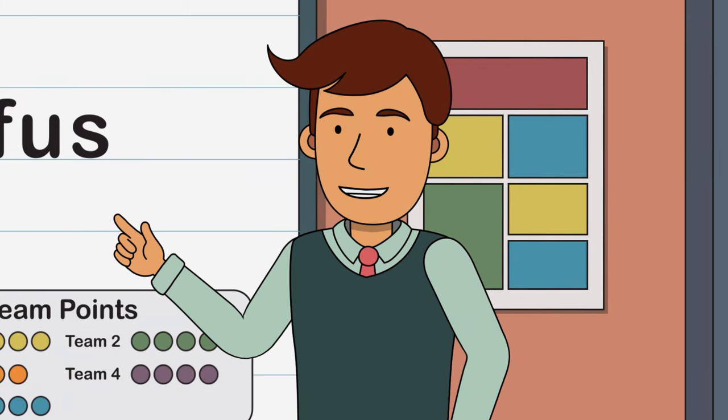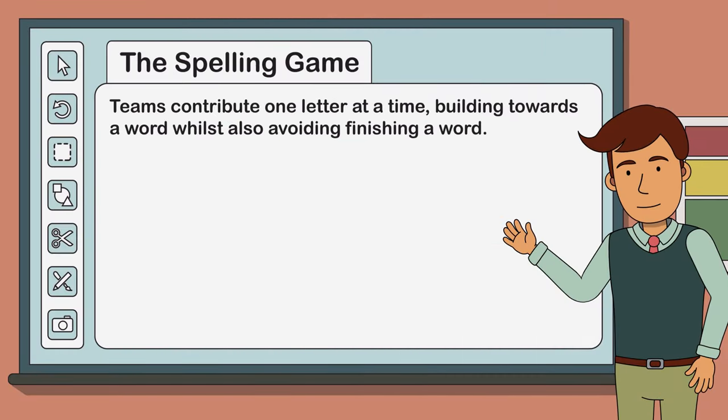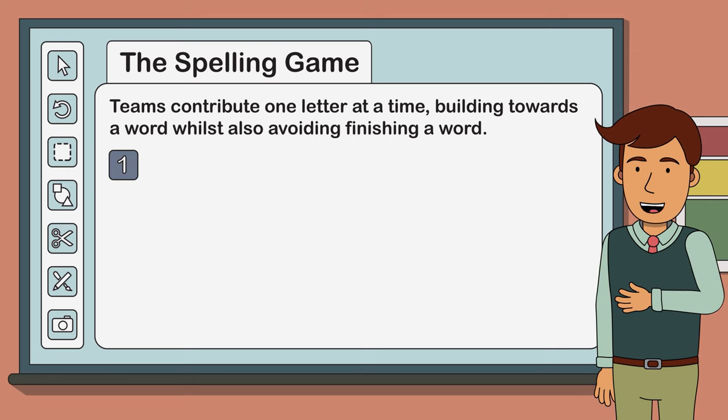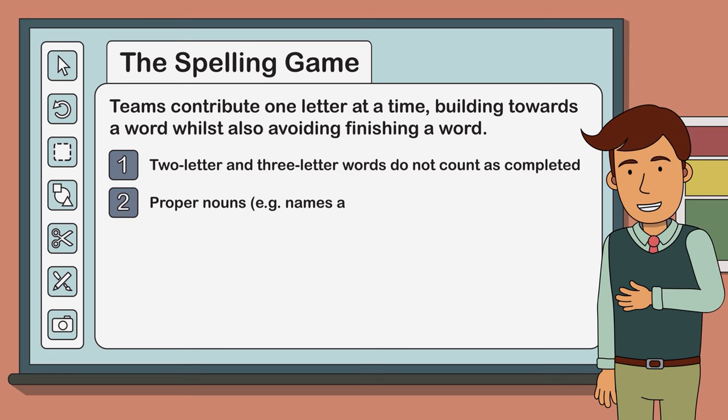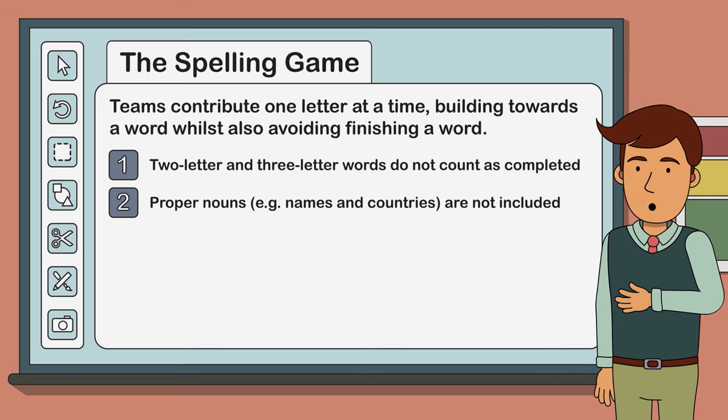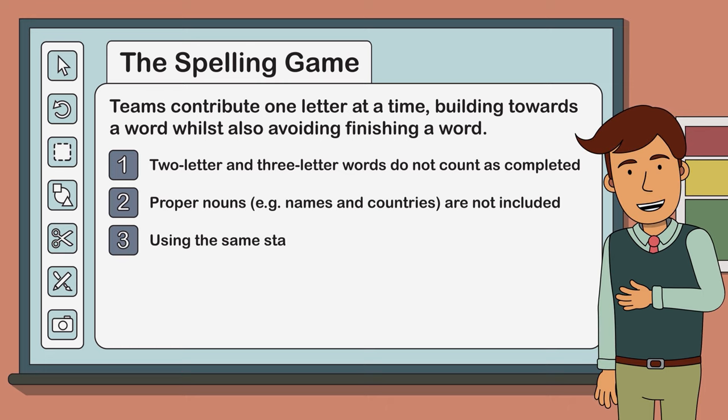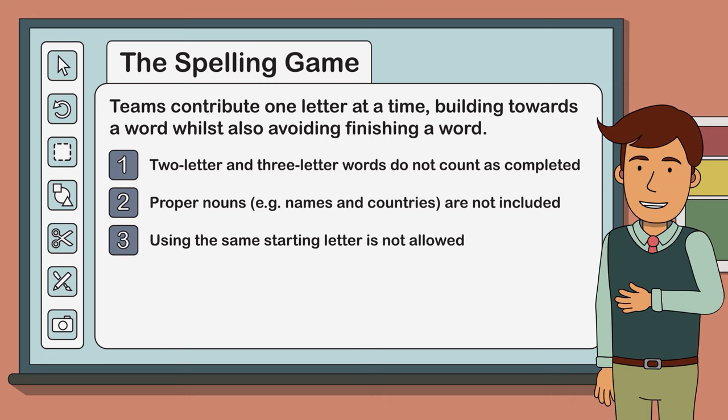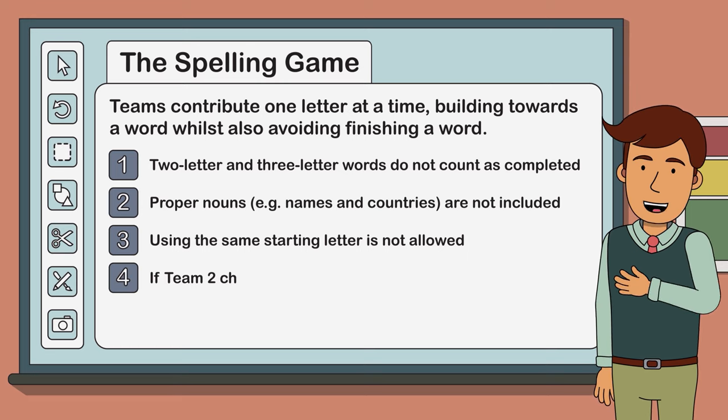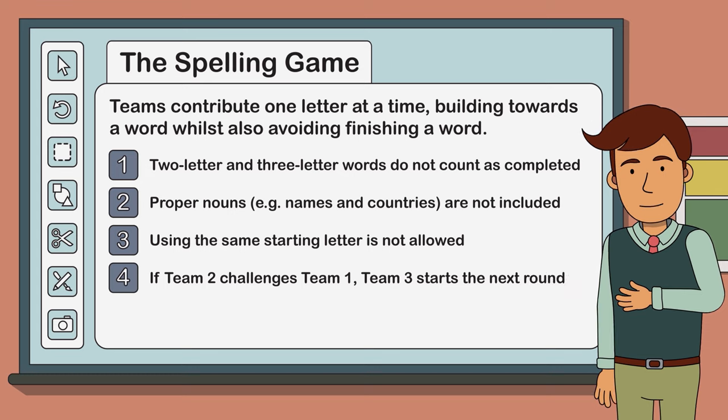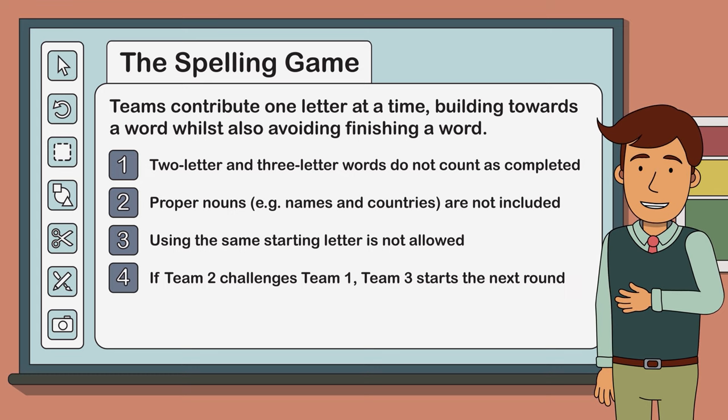A couple of other rules to keep the game moving smoothly. As mentioned, two and three letter words do not count as completed words. Proper nouns such as names and countries are not included in the spelling game. You can't use the same starting letter twice in a game. And lastly, if team two challenges team one, then team three starts the next round regardless of the result of the challenge.